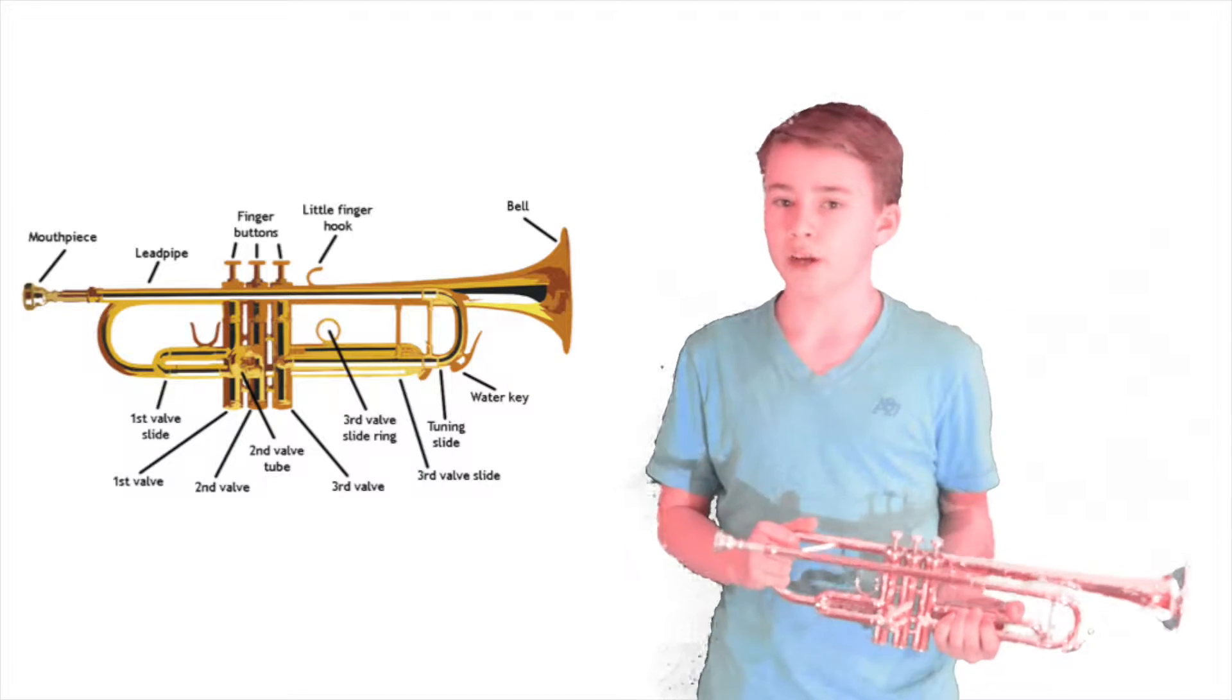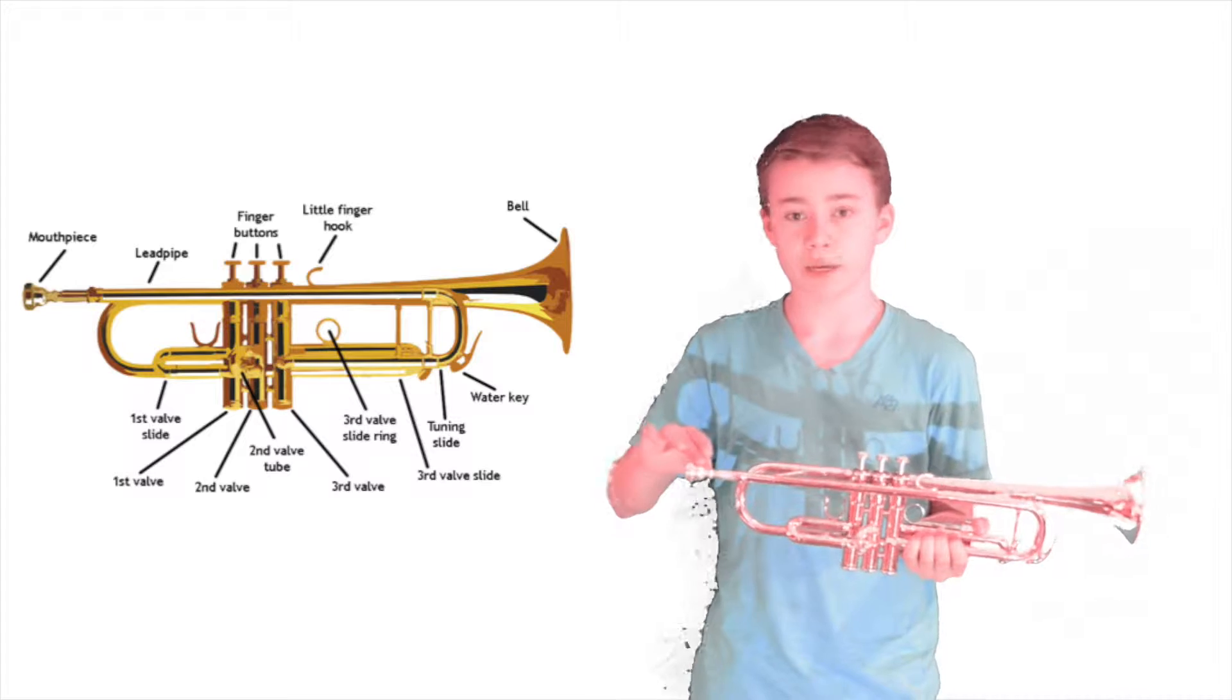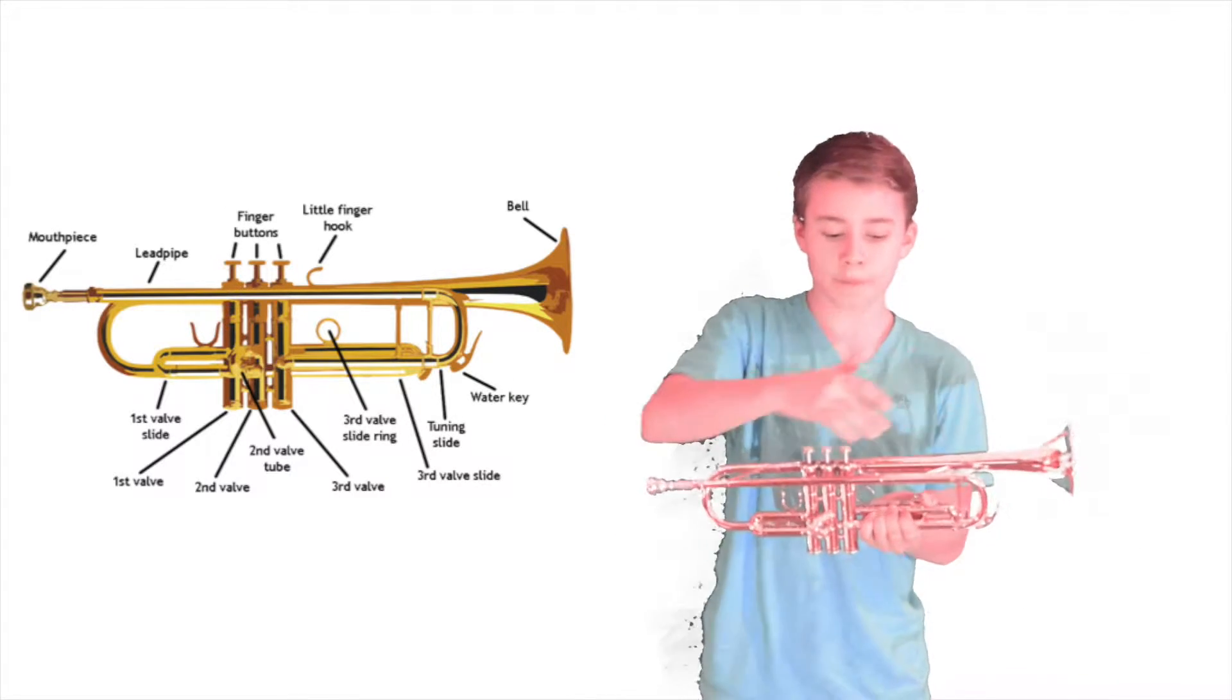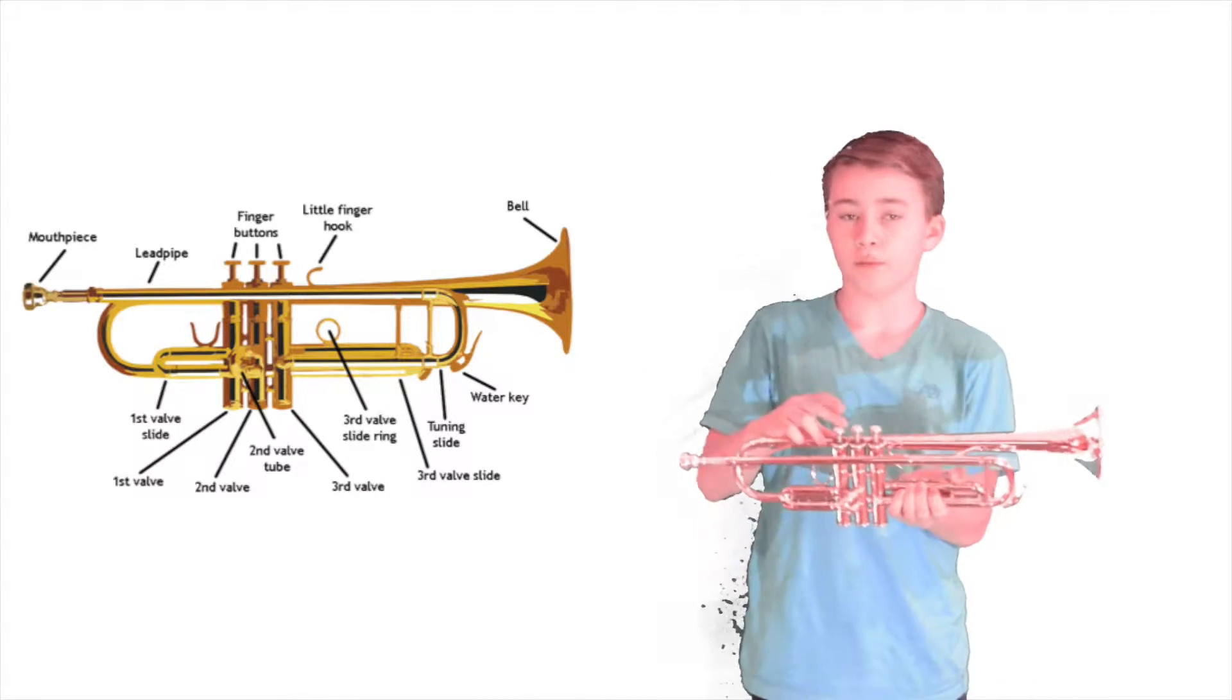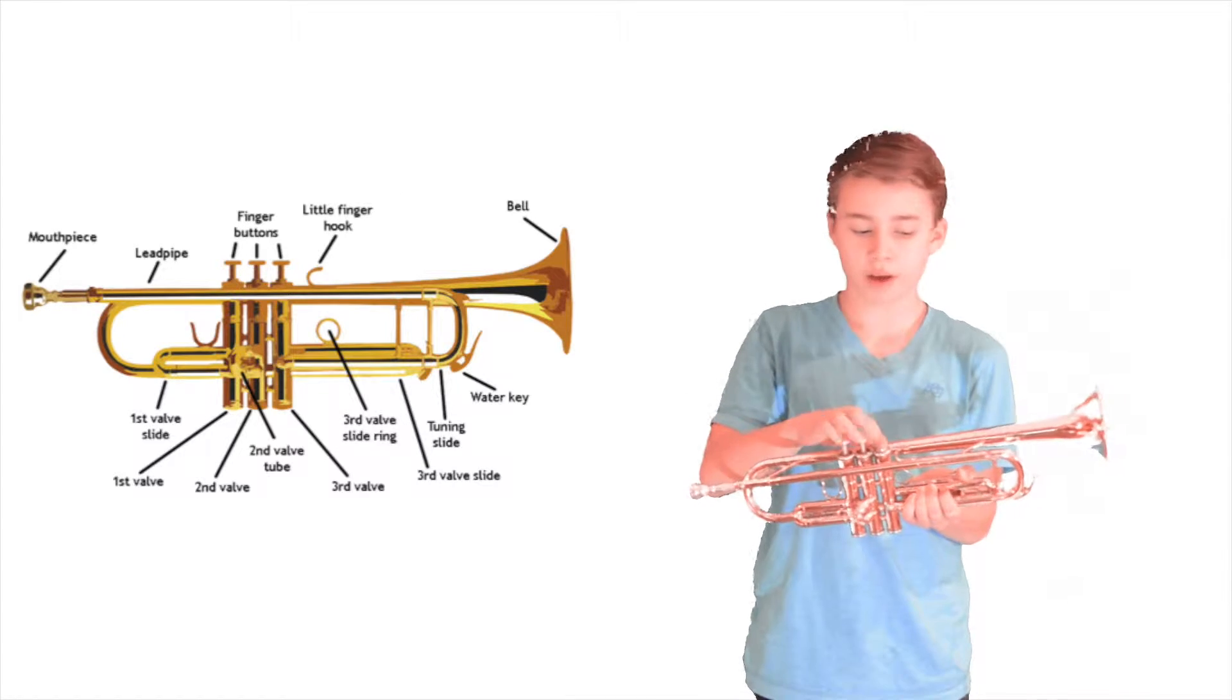Let's quickly go over the parts of the trumpet. Here we have the mouthpiece, the mouthpiece receiver, the lead pipe, the pinky ring, valve one, valve two, and valve three.